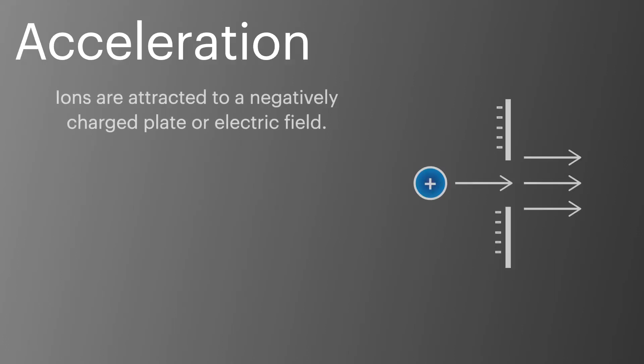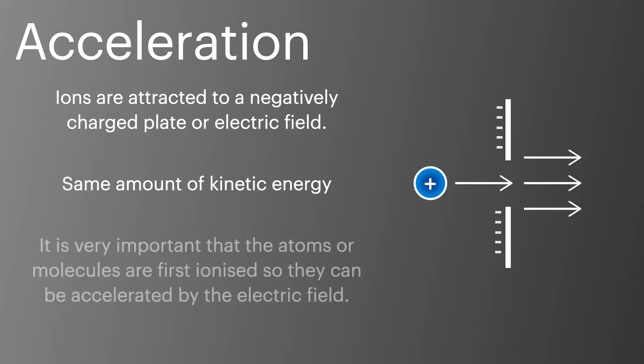Once the ions are formed, they're accelerated in a negatively charged electric field. It's really important to remember that in this step, all the ions are given the same amount of kinetic energy. This is key to how a mass spectrometer works, but also very useful to remember when we start to look at the calculations.